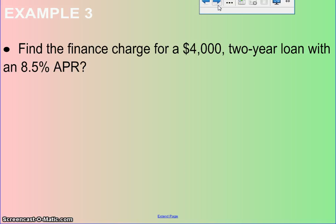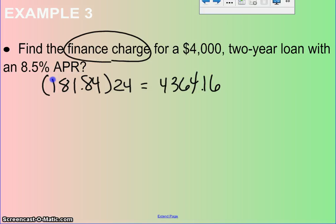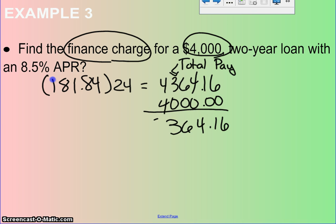Example three says find the finance charge for a $4,000 two-year loan at an APR of 8.5%. We already found the payments were $181.84 apiece. When we multiplied that by the two-year loan of 24, we found it was a total of $4,364.16 paid. We figured that out in examples one and two. Now it's asking about the finance charge. I know this is my total payments, and $4,000 was my principal. If I subtract my principal from the total payments, I get that the total interest paid was $364.16.